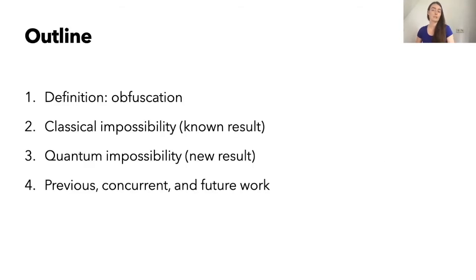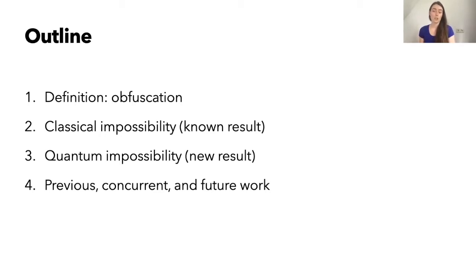The outline for today's talk is simple. First I'll tell you about the cryptographic task of obfuscation. Then I'll walk you through a known result about the impossibility of classically obfuscating classical circuits. Immediately afterwards I'll tell you how we adapted the classical proof to show that a wider notion of obfuscation is also impossible, namely that we cannot even quantumly obfuscate classical circuits. Towards the end I'll compare it to previous and concurrent work, and I'll end with some open questions.